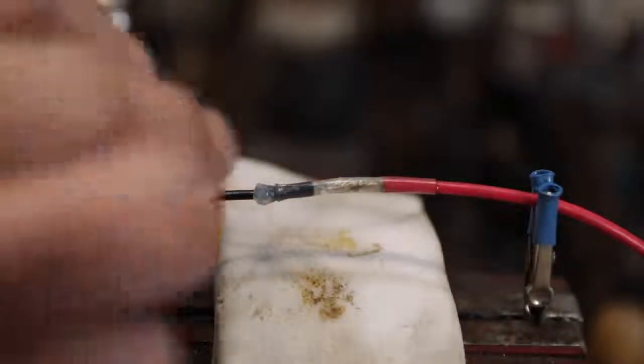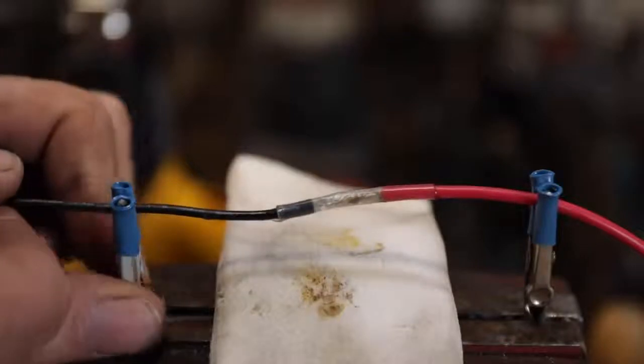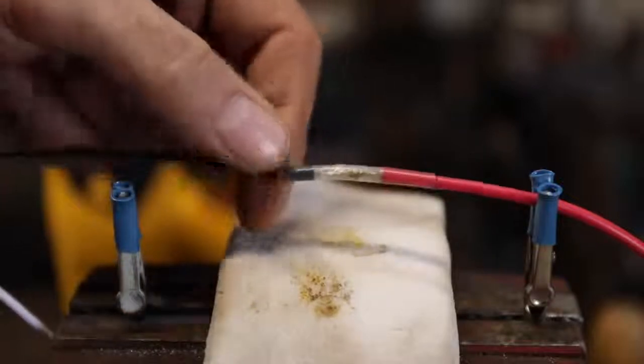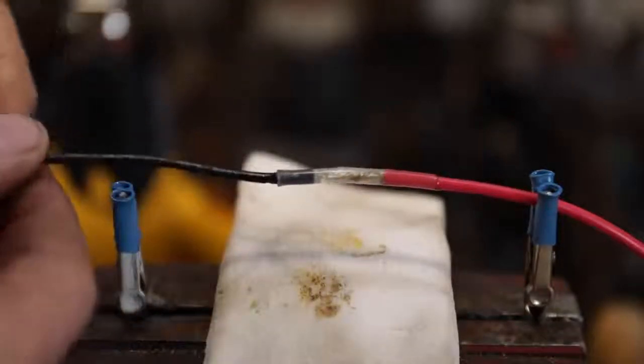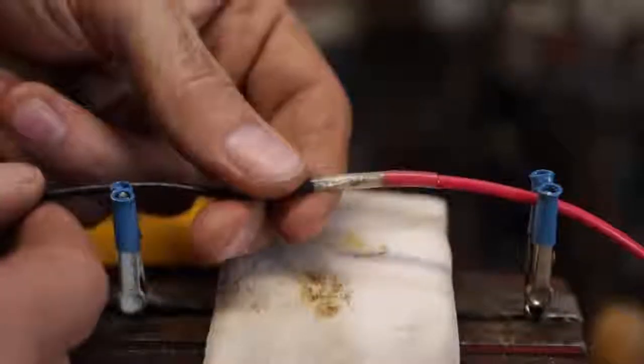Now once that's cool to the touch, you can clean that silicone off there and you have a really good, as good as you're going to get, waterproof connection for joining two wires together that's probably going to be tougher than the wire itself.